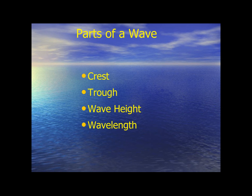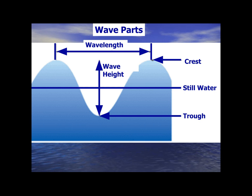These are the parts of the wave you have to know about. The crest is the highest point on the wave; the trough is the lowest point on a wave. The wave height is the actual distance from the crest to the trough, and the wavelength is the horizontal distance between the crest of one wave and the crest of the next wave. Make sure you can identify all of these — trough is the bottom, crest is the top.